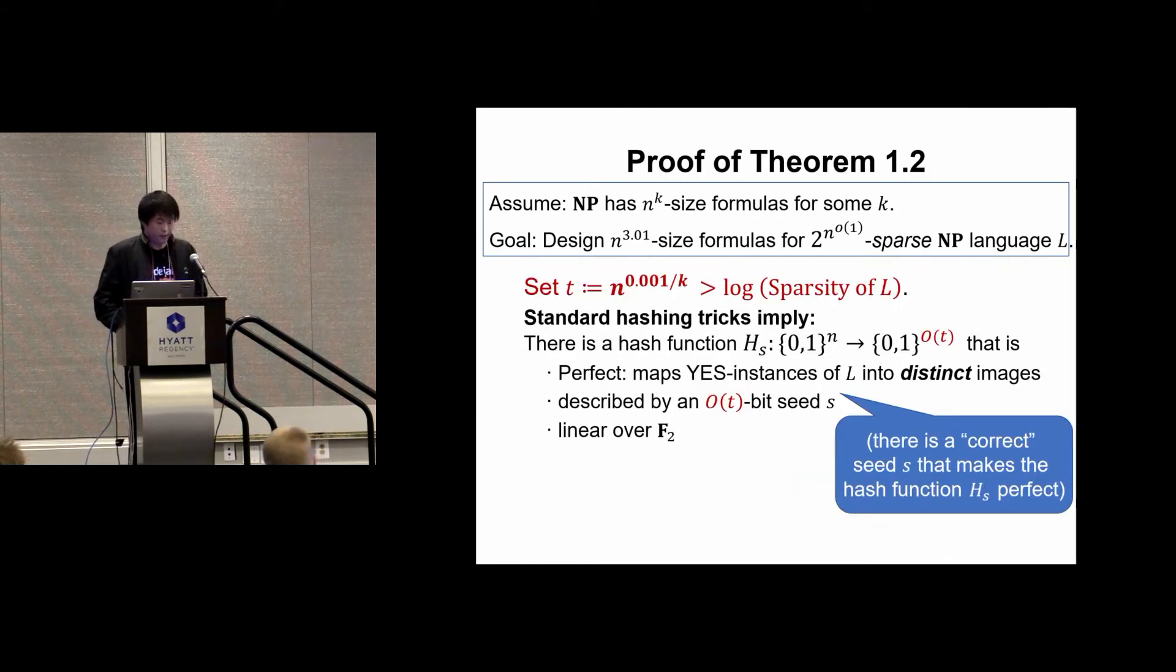Now I'll describe the proof in more detail. First we'll set the parameter t to be slightly bigger than the log of the sparsity. Then there is a hash function that maps an n-bit string into a t-bit string, such that all the yes instances of L are mapped into distinct images. So this is a perfect hash function. And this hash function has a seed length only O(t). For any given sparse language L, there's always a way to pick a correct seed S, such that the hash function described by this seed can be perfect on the yes instances of L.